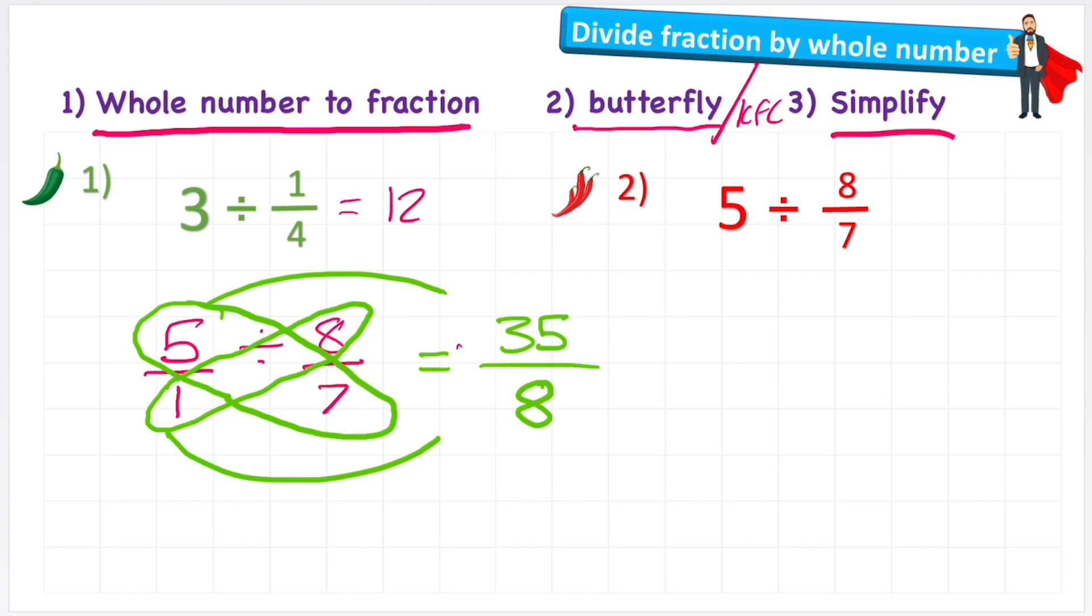Again, I have an improper fraction. We don't want to leave it as an improper, so I'm simply going to find out how many whole 8s I have in 35. So I could go up in my multiplication table: 8, 16, 24, 32. I get to 32 with 4 sets, but I have 3 left over, so I have 3/8. So my answer is 4 and 3/8.